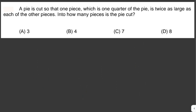A pie is cut so that one piece, which is one quarter of the pie, is twice as large as each of the other pieces. We need to find how many pieces the pie is cut into. We're given that one piece is 1/4, and the rest of the other pieces are twice as large as each other.